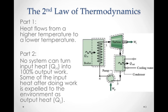The second law of thermodynamics. Part one, heat flows from a high temperature to a low temperature. And part two, no system can turn input heat at a high temperature into 100% output work. Some of the input heat after doing the work is expelled into the environment as output heat at a lower temperature.